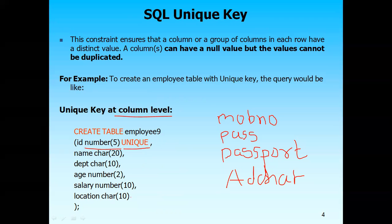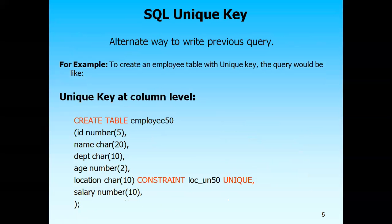Similarly, if you want location as a unique key — location will be unique for every employee — you can just give a space and write 'unique'. SQL is not case sensitive, so you can also write it in lowercase. So by giving space you write 'unique', and my location will be created as a unique key in the table. One table can have multiple unique keys and they can be null. This is the column level syntax where location is declared with the unique key constraint.